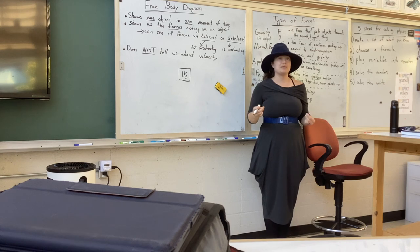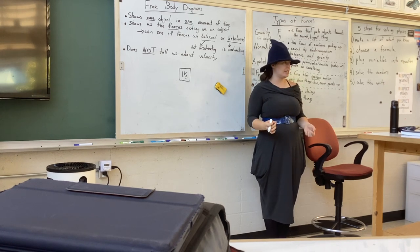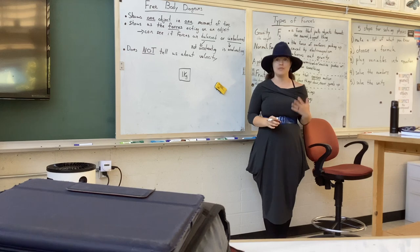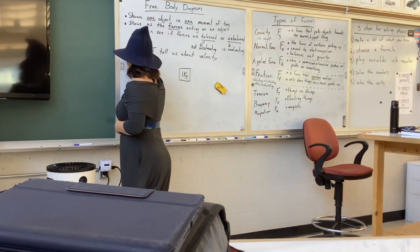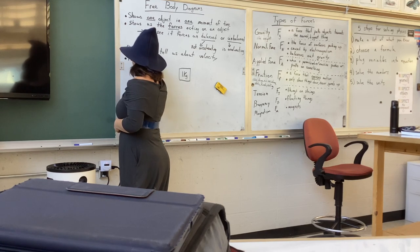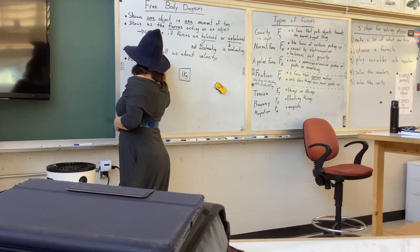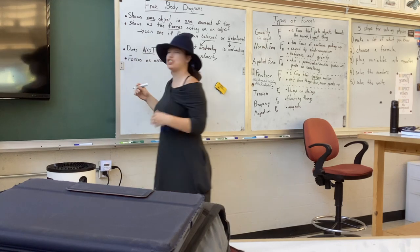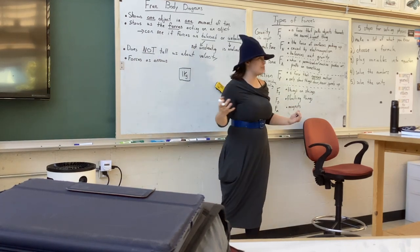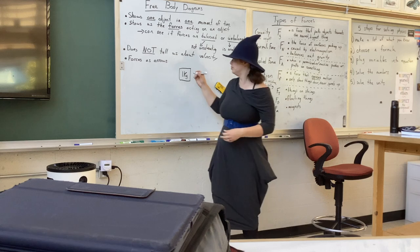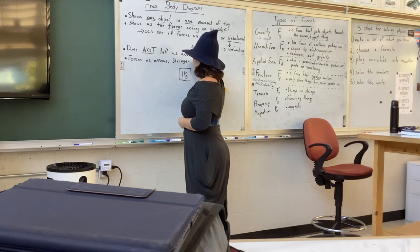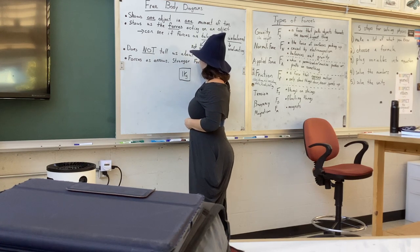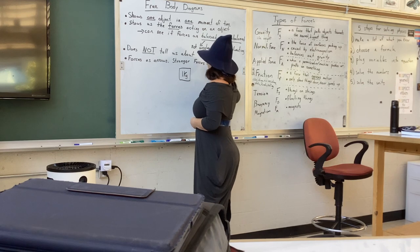We represent all of the forces acting on this object as arrows — so forces are drawn as arrows. What we do here is: the stronger the force, the bigger the push or pull, the longer the arrow. So stronger forces equal longer arrows.